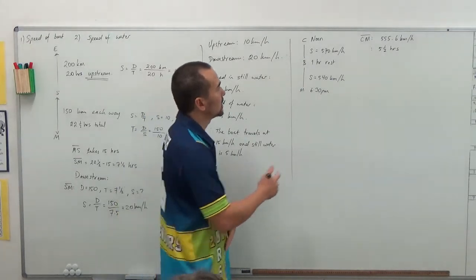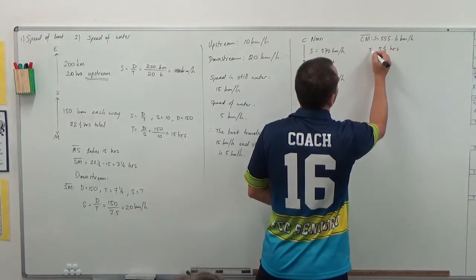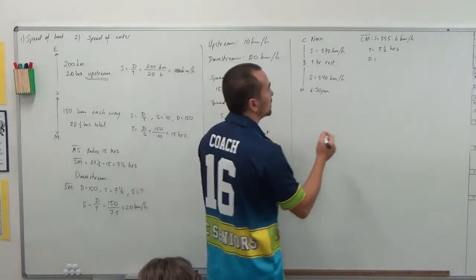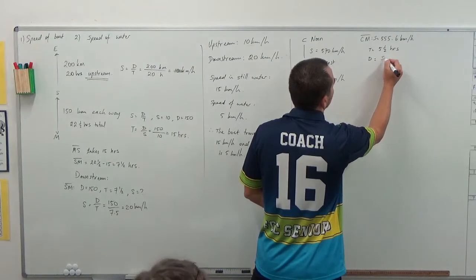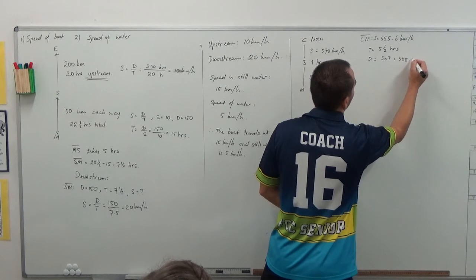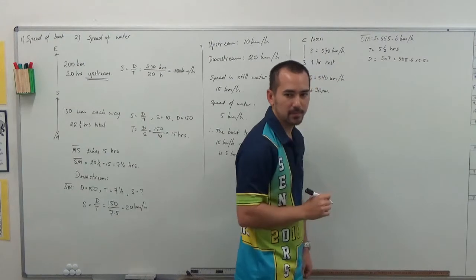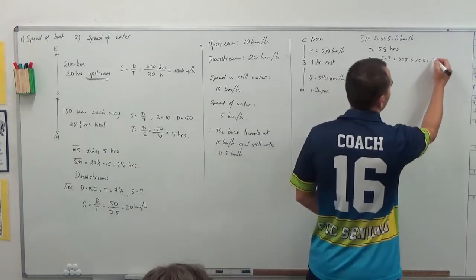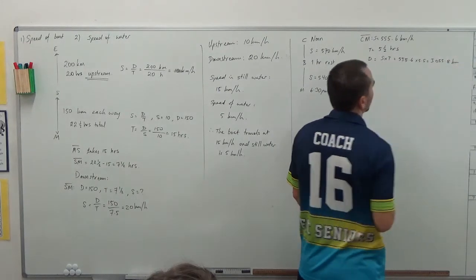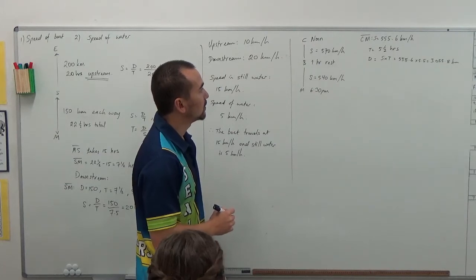Okay, so that means that we can work out distance now. The overall distance would be speed times time, which is 555.6 times 5.5, and it comes to 3,055.8 kilometers. Okay, so that's the overall distance.